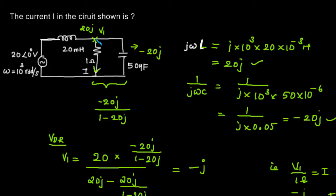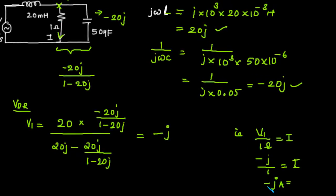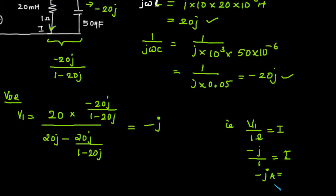Then once we found this potential, we can easily find out the current through 1 ohm as V1 by 1 ohm. So the correct answer is -j amperes.